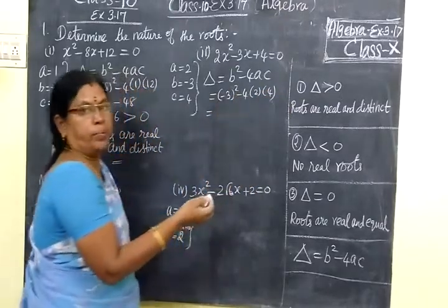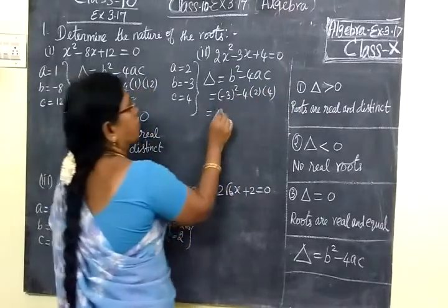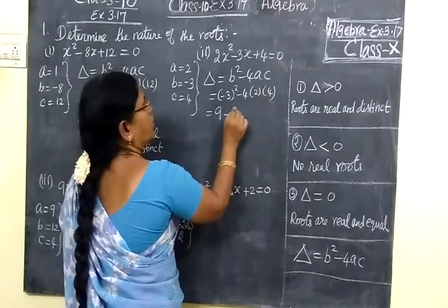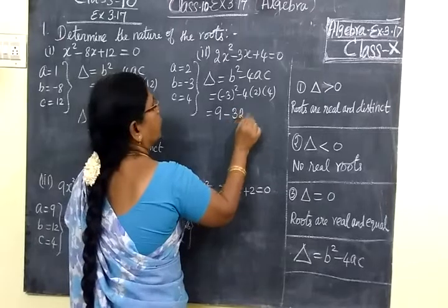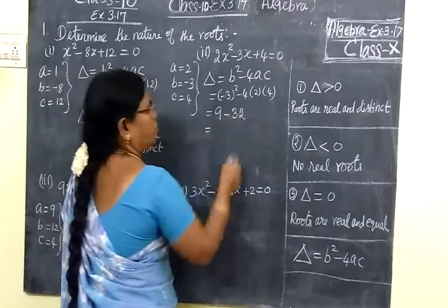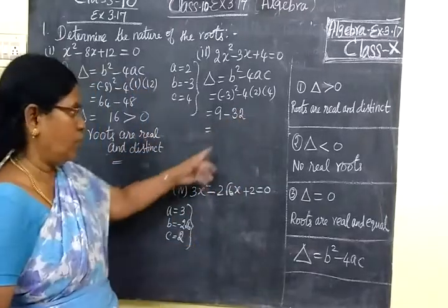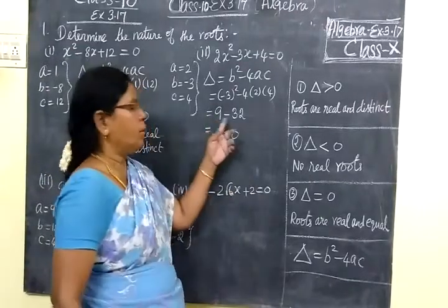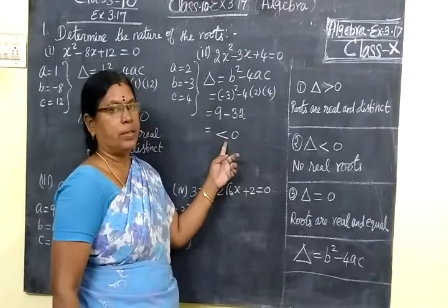So this is 9 minus 32. Here 4 twos are 8, 8 fours are 32. So this equals negative 23. Definitely it will be less than 0, because smaller number minus greater number. So this is less than 0.